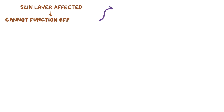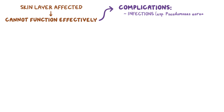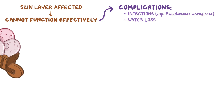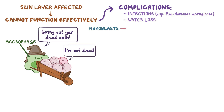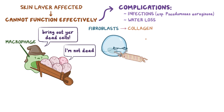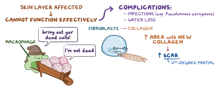When a skin layer is affected, it means that the skin can't function effectively, and common complications are infections, especially from Pseudomonas aeruginosa, and water loss through the damaged skin. As burns heal, macrophages move into the tissue to remove dead cells, and fibroblasts create new collagen to heal the damaged skin. The more extensive the area with new collagen, the more extensive the scar. Scars are common in second degree deep partial thickness burns, and third and fourth degree burns.